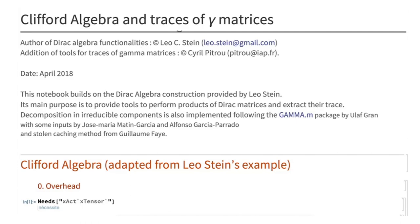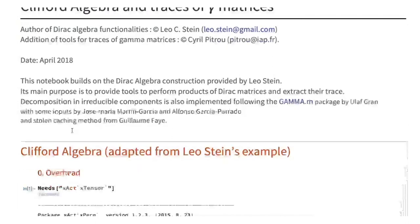This notebook was done with the help of Leo Stein, who did most of the work for the Clifford algebra. I also used inputs from José Maria Garcia, who helped a lot — there's a typo in the name, it should be R. There are also inputs from Alfonso Garcia-Parador, who will talk about various things today, and I've borrowed some methods from my colleague Guillaume Fay, who will also give a talk.